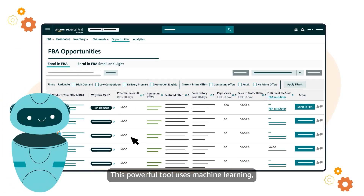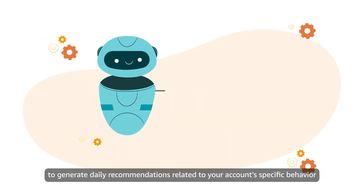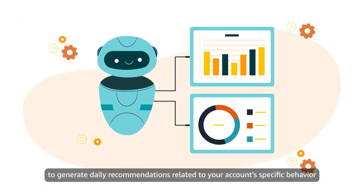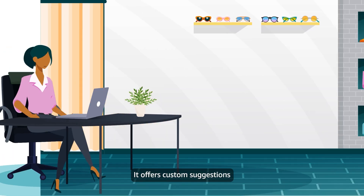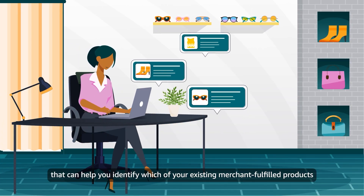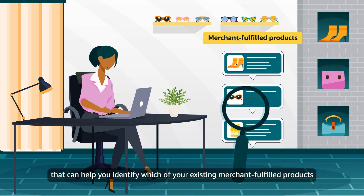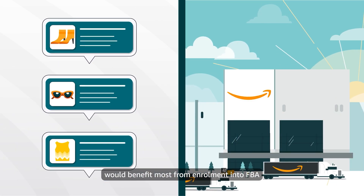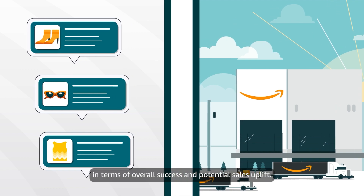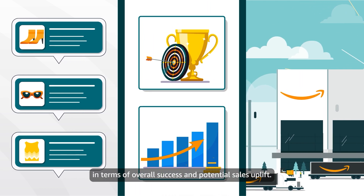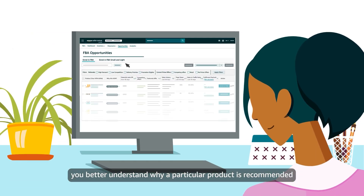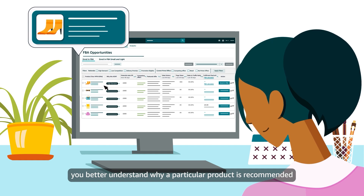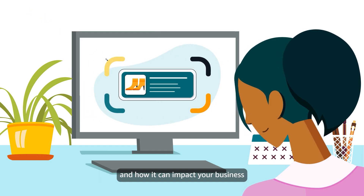This powerful tool uses machine learning to generate daily recommendations related to your account's specific behaviour and inventory. It offers custom suggestions that can help you identify which of your existing merchant fulfilled products would benefit most from enrolment into FBA in terms of overall success and potential sales uplift. The tool also provides supporting data points to help you better understand why a particular product is recommended and how it can impact your business.